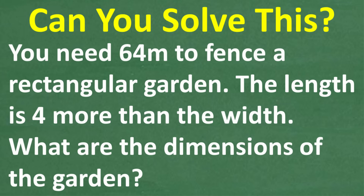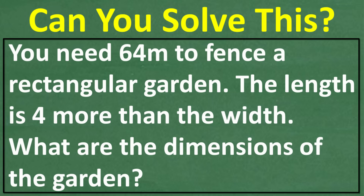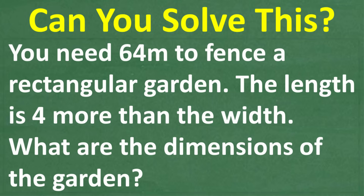Do you think you can figure out some way to solve this math word problem? Let's take a look at it and see how well you do. So the question is the following: you need 64 meters to fence a rectangular garden. The length is 4 more than the width. What are the dimensions of the garden?